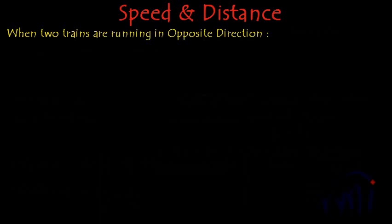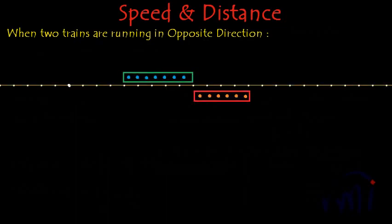In this video we are going to discuss what happens when two trains running in opposite directions try to overtake each other. Let's have a drawing of the trains. We have two trains — one colored in green and another colored in red — and a line in between to guide us through the directions and to measure lengths and distances.